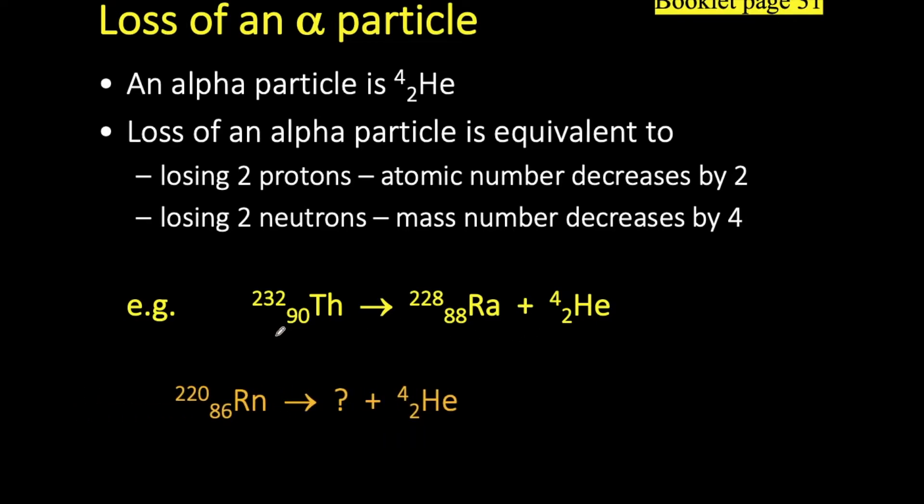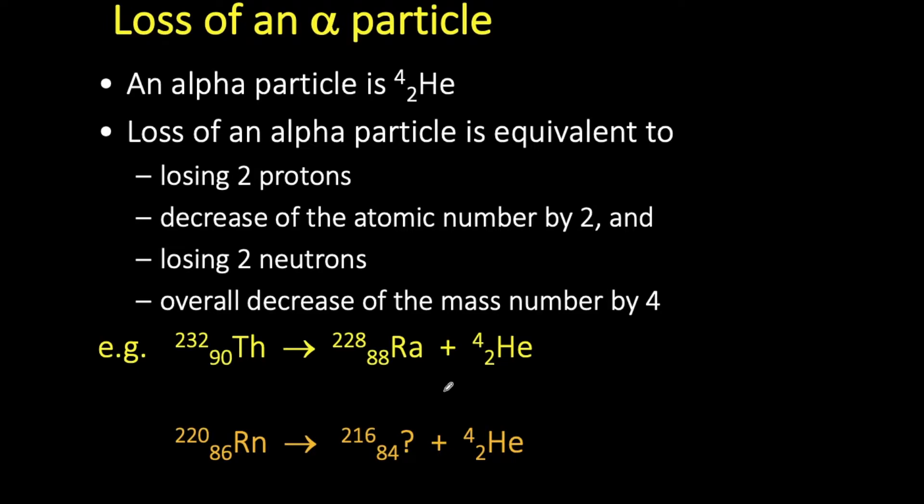So here is an example. What happens to radon when it undergoes radioactive decay? So the mass number is going to decrease by 4. So the new mass number for this unknown is going to be 216. Our atomic number down the bottom is going to decrease by 2 to 84. So that is the first step in completing this example.